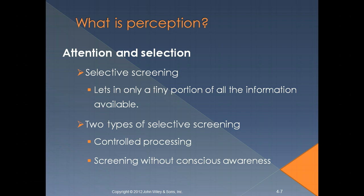There are two types of selective screening: controlled processing, where you're deciding what to focus on, and automatic screening without conscious awareness. For example, if you're in a movie theater and you're focusing on the movie so much, you may lose sight of the fact that you're sitting on a couch, the people next to you, the room — you may be completely focused on the movie. That's how I know a movie is good: if I'm looking at the walls and ceiling, I'm not focused. When I'm really interested, I get sucked in and only remember the movie itself.